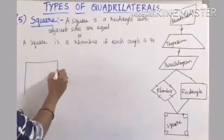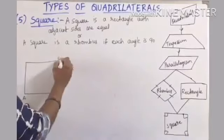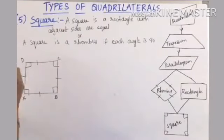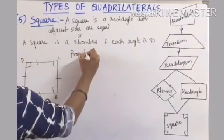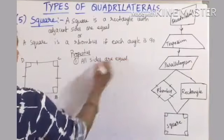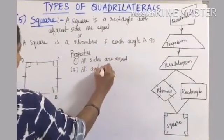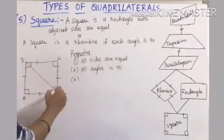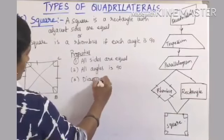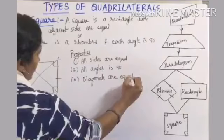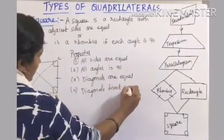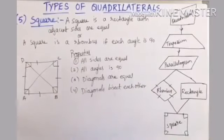Properties of a square: all sides are equal; all angles are 90 degrees; diagonals are equal; and diagonals bisect each other.